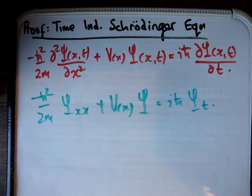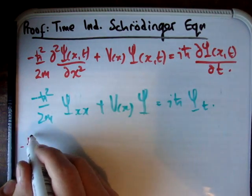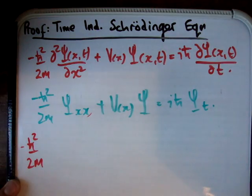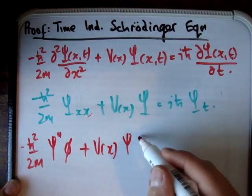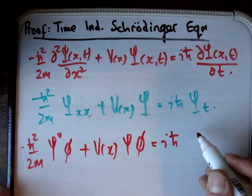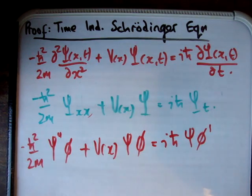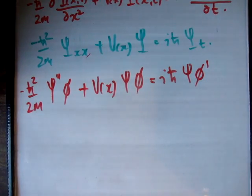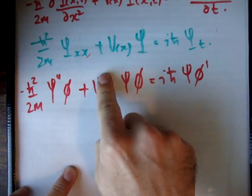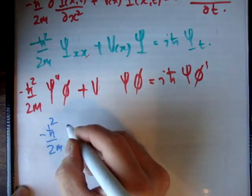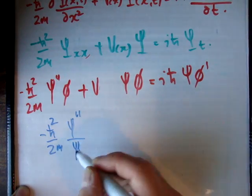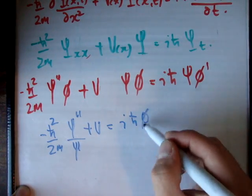The next thing we're going to do is substitute in the separation of variables. We're going to have negative h-bar squared over 2m times small psi double prime phi, plus V of x times phi times psi, equals i times h-bar times psi phi prime. Separating variables, all functions of x go to the left-hand side: negative h-bar squared over 2m times psi double prime divided by psi, plus V, equals i times h-bar times phi prime over phi.